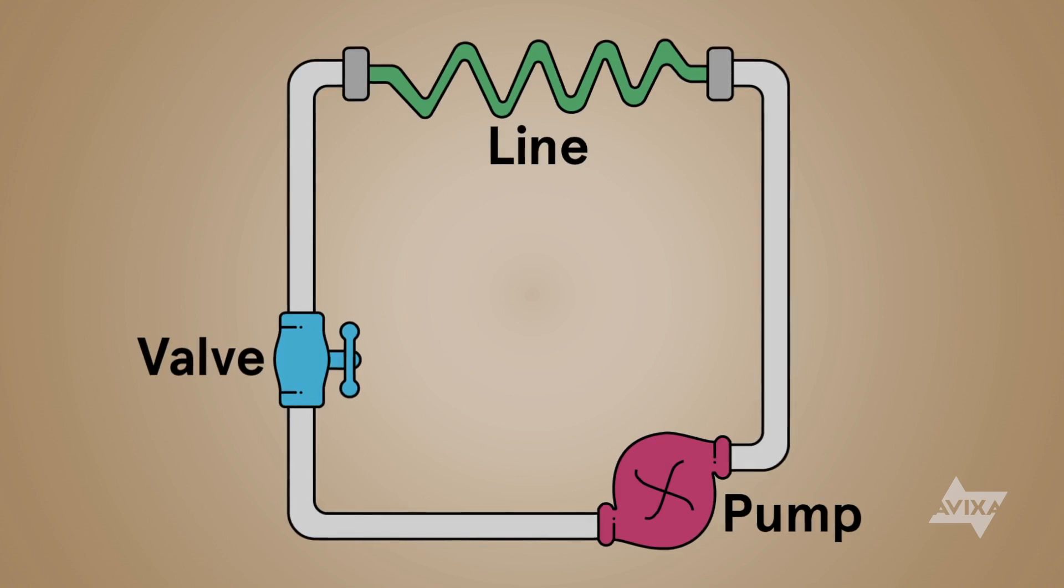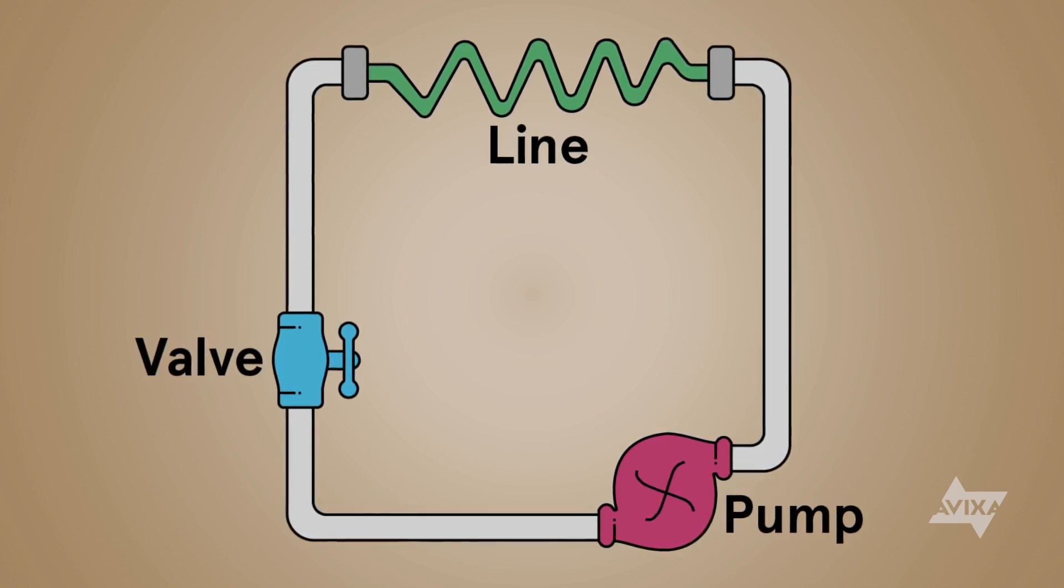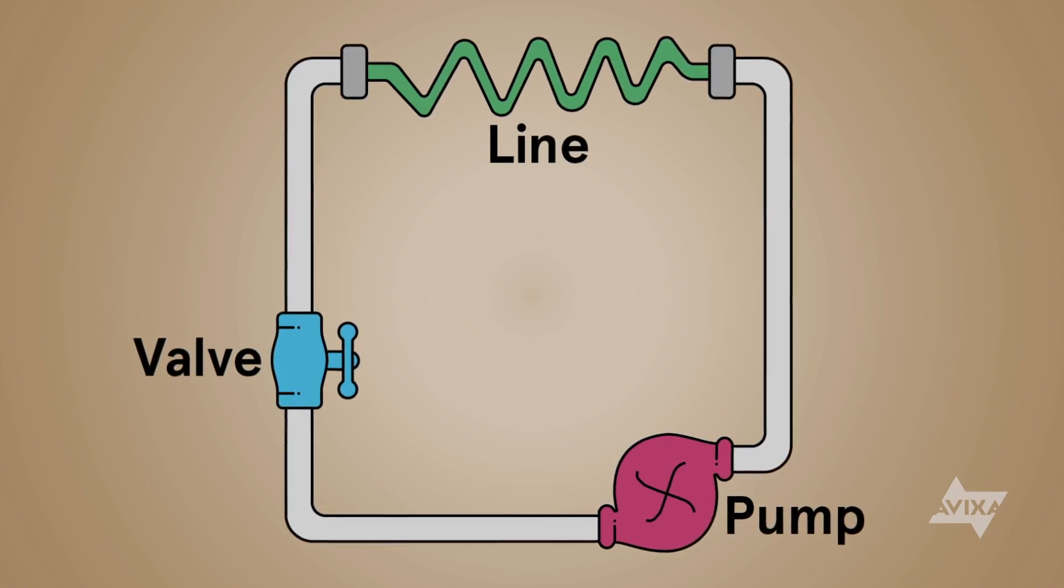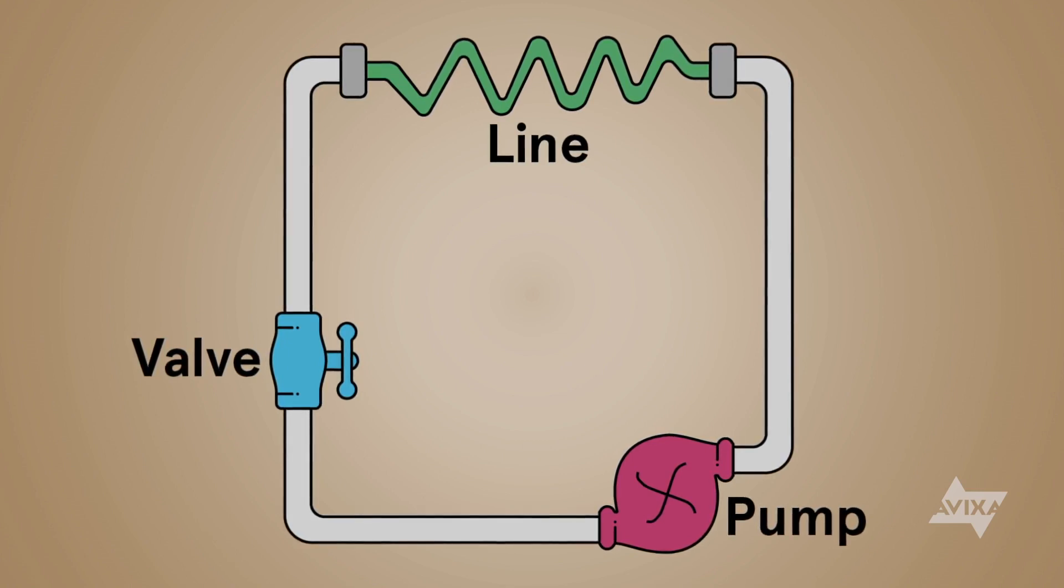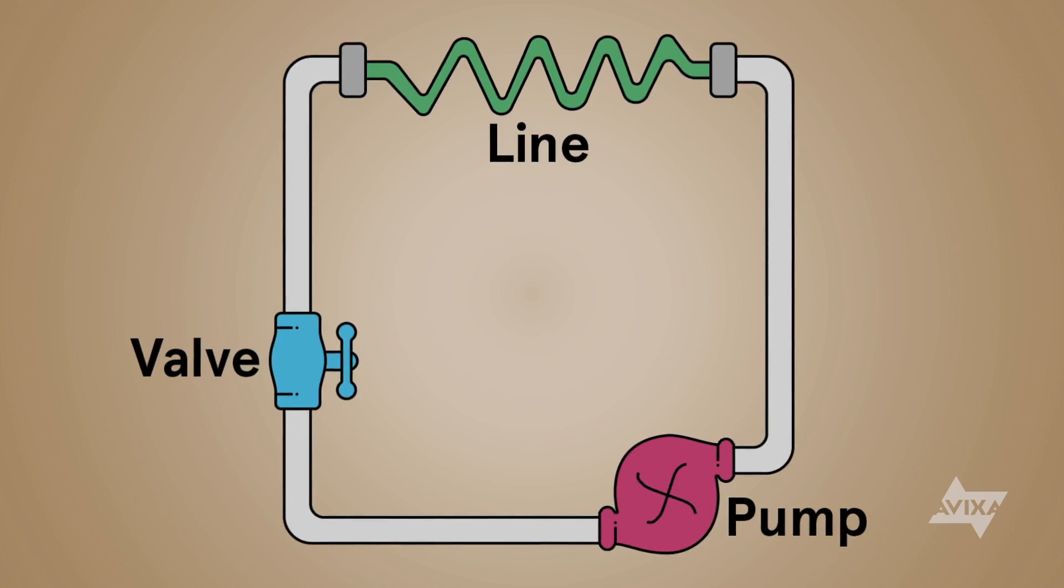A three-quarter inch diameter hose allows more water to flow than a half or five-eighths inch garden hose. Similarly, given the same diameter, a longer hose has more resistance to the flow of water than a shorter hose. Don't forget the pipe itself, like wire, also has resistance. Now, this is a complete analogy with a closed loop system like the electrical circuit.